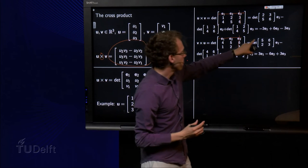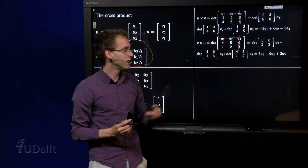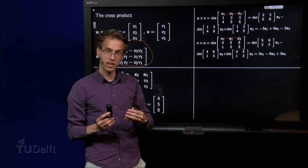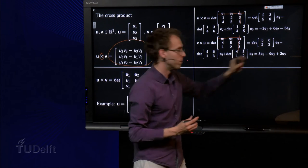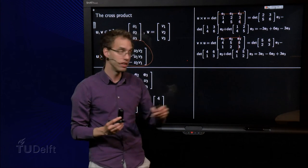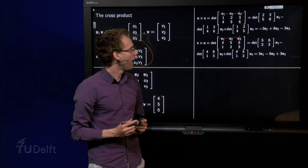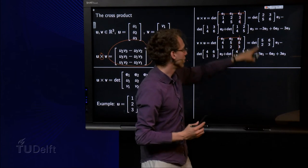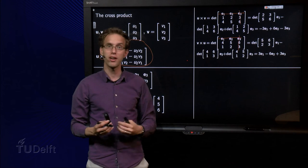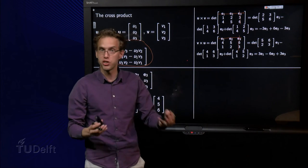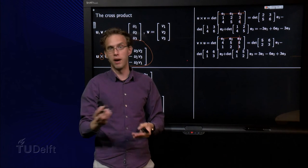What do we get? It's 15 minus 12 equals 3, so 3 times e1. Here 12 minus 6 equals 6 with the minus sign, so minus 6 times e2. And then finally, 8 minus 5 equals 3 times e3. That's odd. You see, u cross v and v cross u are not the same. You get a different answer. So you have to be careful. Actually, the difference is just a sign.